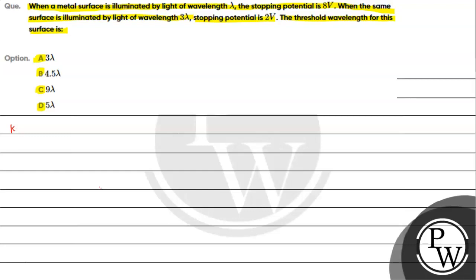For this question, the key concept we use is Einstein's photoelectric equation. According to Einstein's photoelectric equation, the energy incident in the form of a photon equals the work function plus the maximum kinetic energy of the electron. This energy is utilized for the removal of the electron, and the remaining energy is associated with the maximum kinetic energy of the emitted electron.